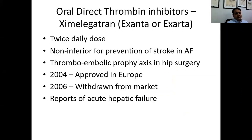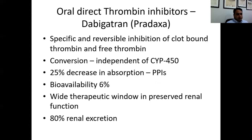The first direct thrombin inhibitor was ximelagatran. It was a twice-daily dose, approved in Europe, and was indicated for prevention of stroke in atrial fibrillation and also used for thromboembolic prophylaxis in hip surgery. However, in 2006, it was withdrawn from the market because at least 2% of the population exposed to ximelagatran showed an increase in liver enzymes.